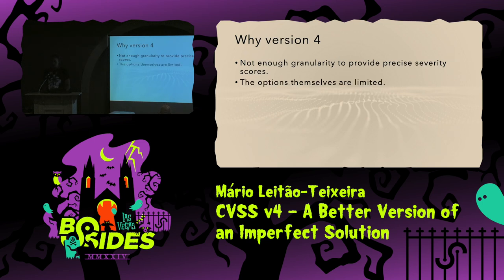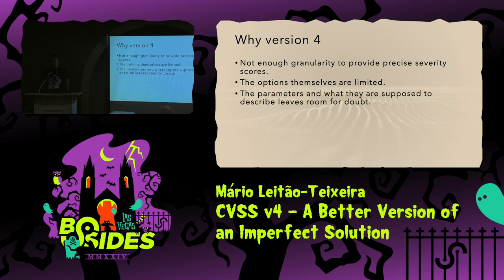The options themselves were limited. For instance, you could define user interaction in version 3.1, and you could say whether it's required or not, but you couldn't really say whether it was a passive or an active type of interaction. Parameters and what they were supposed to describe — the characteristics they wanted to convey about vulnerabilities — were still a bit blurry in some cases. For instance, I know what attack complexity means, but do I really know what it means? So why not try to improve the previous version?